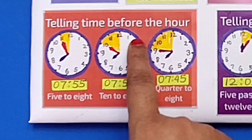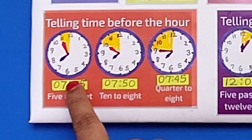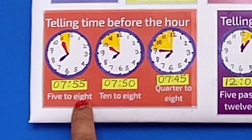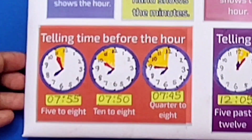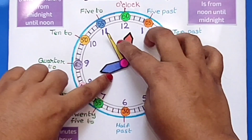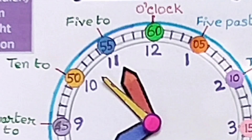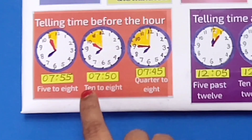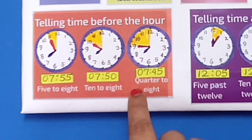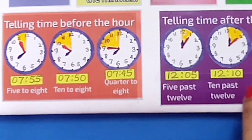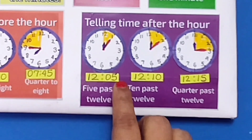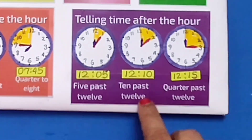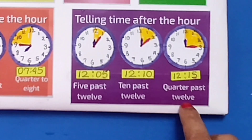Telling time before the hour: there are two ways of telling time. We can say it 7:55 or 5 to 8. When the long hand is on 11, that means it is 55 minutes, that's why it's called 7:55. Now 7:50 is 10 to 8, and 7:45 means quarter to 8. Telling time after the hour: 12:05 means 5 past 12, 12:10 means 10 past 12, 12:15 means quarter past 12.